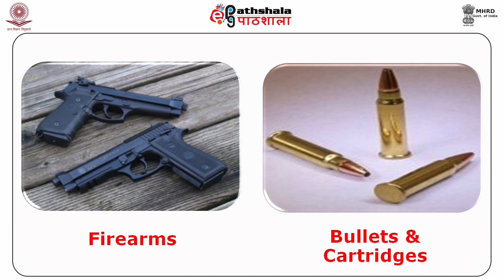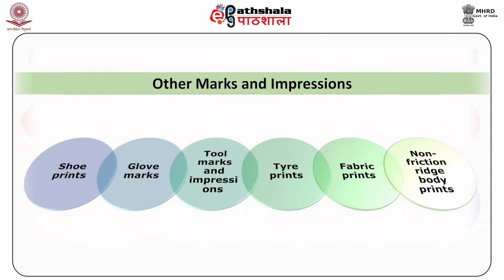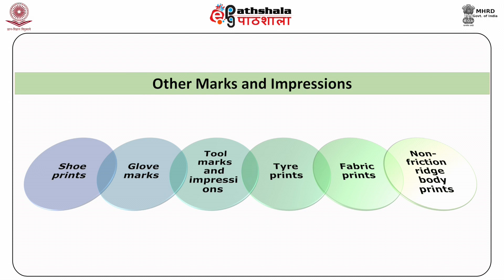Explosives and explosion debris are also sent. The ballistic department examines firearms, bullets and cartridges. The document examination department examines handwriting and documents, paper, rubber stamps, security marks, printers and other printed objects, inks and printing materials, copier and copied material, indentations, typewriters and typewritten materials, embossing and embossed materials, fingerprints, palm prints, shoe prints, glove marks, tool marks and impressions, tire prints, fabric prints, and non-friction ridge body prints.